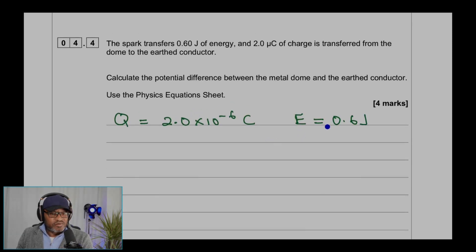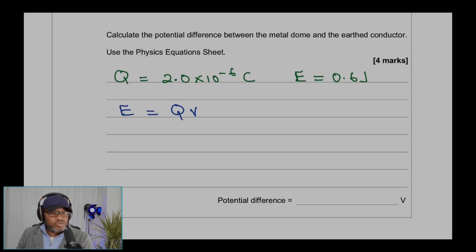The energy transferred is 0.6 joules. Now we need to write the equation: Energy equals QV. V is the voltage. Potential difference is the voltage. We're looking for V, so we make V the subject: V equals E over Q.